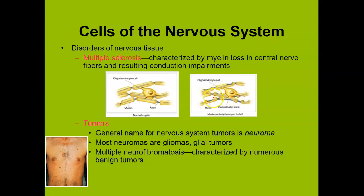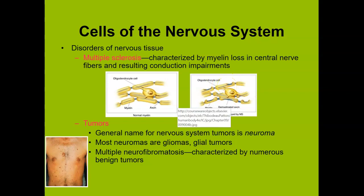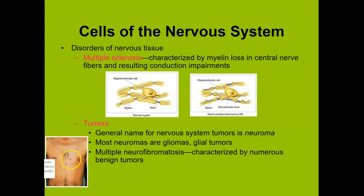When myelin is lost, you lose that insulation along the length of the axon, which slows down axon conduction or electrical conduction. That means one cell finds it very difficult to send an electrical impulse to the next cell — that's what happens during multiple sclerosis. Tumors, different kinds like a neuroma, are often glial tumors. Neurofibromatosis is basically a bunch of little benign tumors that form along the length of axons, and sometimes they push out on the body so you can see the little tumorous masses.